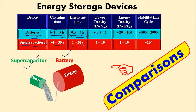Now look at power density — power density is measured in kilowatts per kilogram. If you take one kilogram of battery, it gives around 1 kW/kg, but the supercapacitor is higher — almost 10 kW/kg.